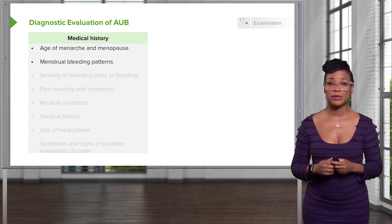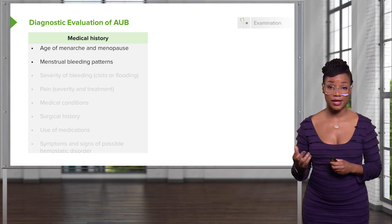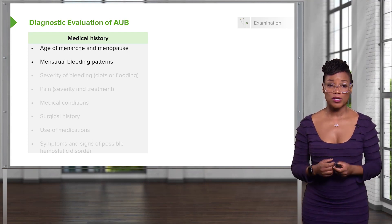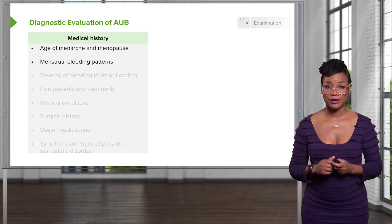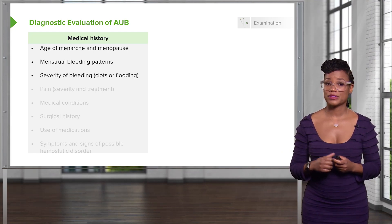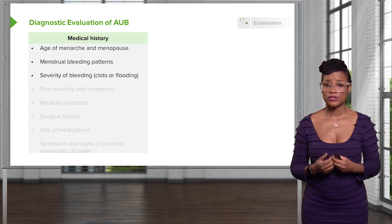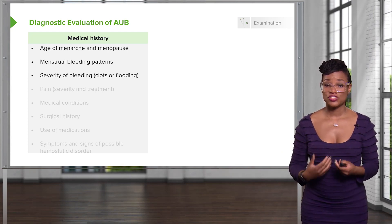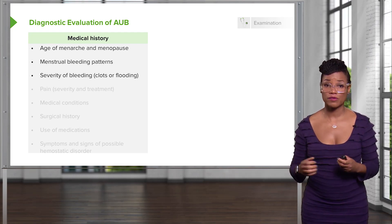Then you want to ask them about their menstrual bleeding patterns. Do they have oligomenorrhea, polymenorrhea, amenorrhea? You want to make sure that's clearly documented in your medical record. Then you want to ask them about the severity of bleeding. Do they pass clots? Do they ruin their nightgown at night? Do they have to change their pants at work, which can be very embarrassing and very distressing for many women?